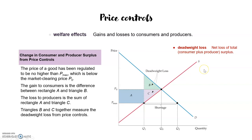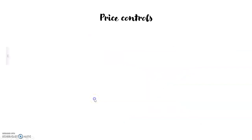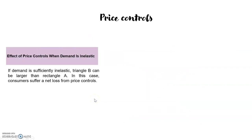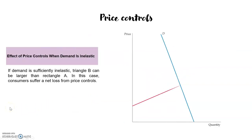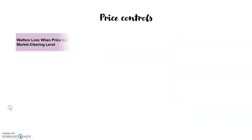The deadweight loss is the net loss of total surplus — it is a change in welfare for the whole society. Area B is lost by the consumers and area C is lost by the producers, so society as a whole is in a worse situation compared with perfect competition.